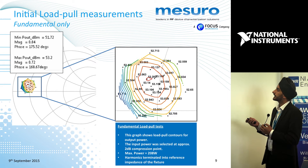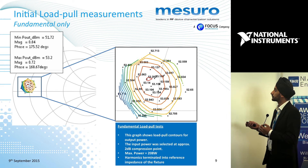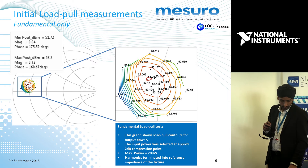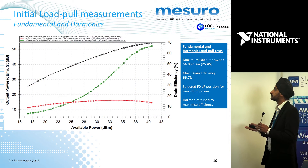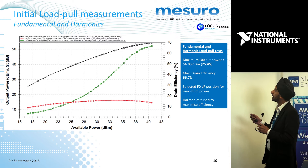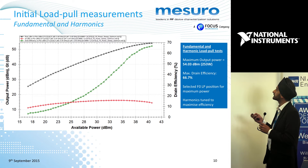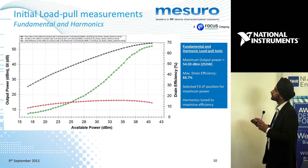This is the area we had targeted to do the measurements, and with just fundamental load pull with no harmonic, we got to about 200 watts of power. We then did a power sweep into the optimum load and also tuned the two harmonics to try and optimise the efficiency. At 66% drain efficiency, we got to about 253 watts of output power with that set.